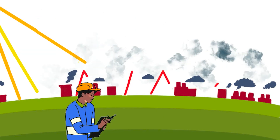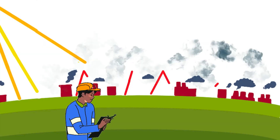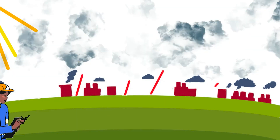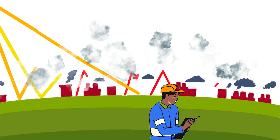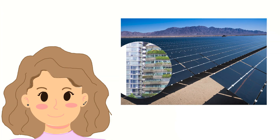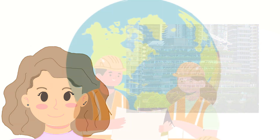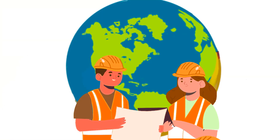Engineers around the world are developing methods to reduce greenhouse gas emissions. For example, they're creating more efficient renewable energy sources and designing buildings that use less energy. It's essential to reduce our carbon footprints to reduce the levels of greenhouse gases in the atmosphere to their natural states, ensuring a stable climate for everyone.